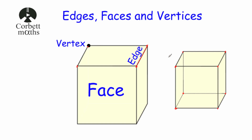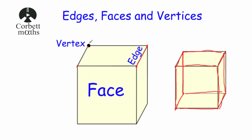Now let's have a look at edges. Edges are what join up the vertices of a three-dimensional shape. So here we've got four edges on the top of the cube, four edges going down the cube, and four edges at the bottom. So a cube has got 12 edges. So faces are the individual surfaces of a three-dimensional shape, vertices are the corners where the edges meet, and the edges join up the vertices.